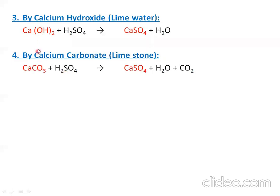Group 2 elements like calcium and magnesium react well with strong acids such as HCl, HNO3, and sulfuric acid. However, to obtain the sulfate ion specifically, you must use sulfuric acid. That is why sulfuric acid is the acid of choice when preparing magnesium sulfate or calcium sulfate.